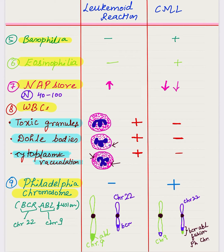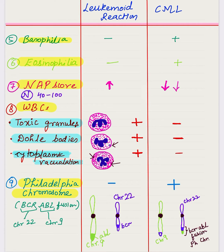In CML, the myeloid precursors are immature, while in leukemoid reaction they are usually mature. There is a score called the neutrophil alkaline phosphatase (NAP) score. This enzyme, alkaline phosphatase, is more prominent in mature precursors seen in leukemoid reaction, so the NAP score is generally high in leukemoid reaction. In CML, since myeloid precursors are not maturing, the NAP score is low — sometimes as low as 0. The normal range for NAP score is 40 to 100.